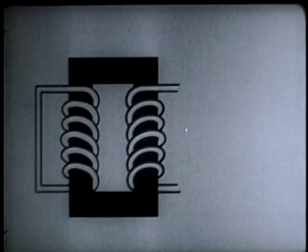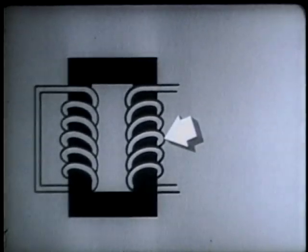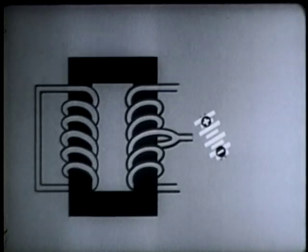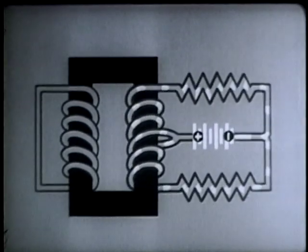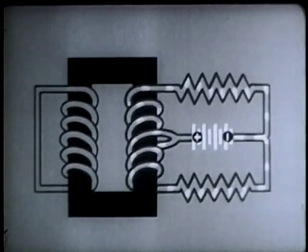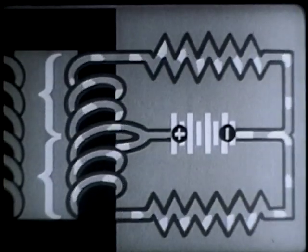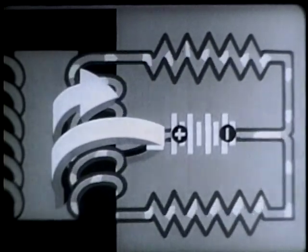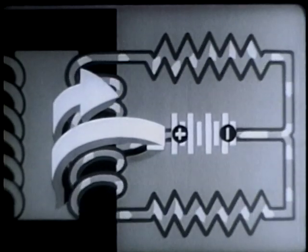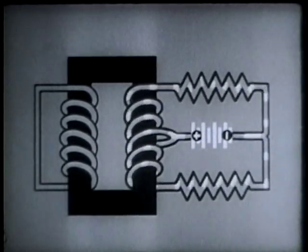But suppose we want current to flow in one winding without producing any effect whatever in the other winding. We can do this by connecting the exact midpoint of one winding to one side of our current source and connecting the other side through equal resistances to both ends of the winding. Now let's close the circuit and watch the path of the current. Because the resistances are equal, the current divides equally between the two halves of the winding. There are now two equal currents flowing through the winding in opposite directions. Their magnetizing effects cancel each other, so no flux is produced in the core. Consequently, no current is induced in the second winding, even when the current in the first winding is changing.